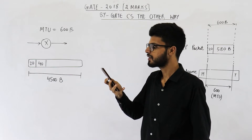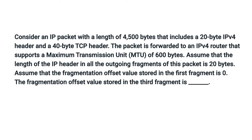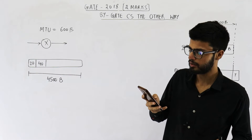The question reads: consider an IP packet with a length of 4500 bytes that includes a 20-byte IPv4 header and a 40-byte TCP header. The packet is forwarded to an IPv4 router that supports a maximum transmission unit (MTU) of 600 bytes. Assume that the length of the IPv4 header in all outgoing fragments is 20 bytes, and the fragmentation offset value stored in the first fragment is 0. The fragmentation offset value stored in the third fragment is?